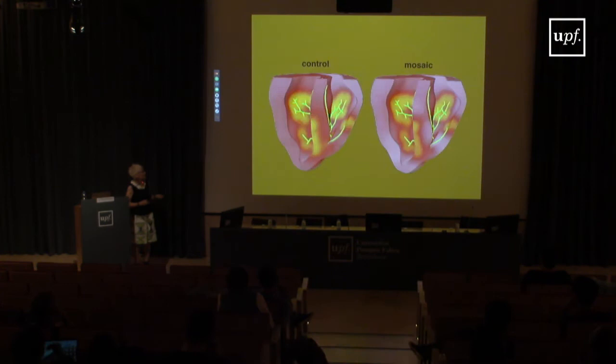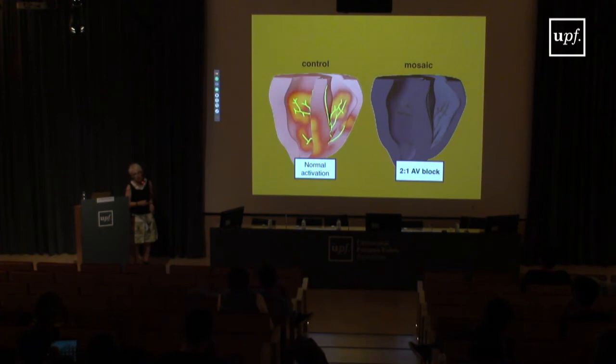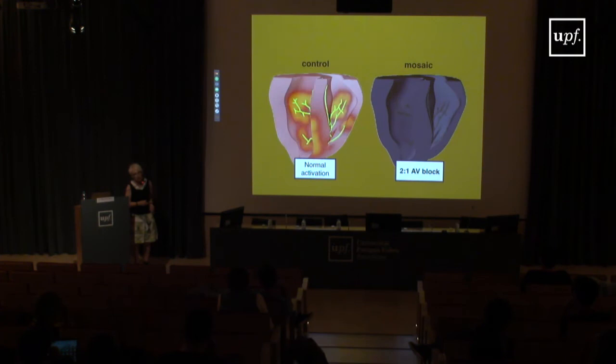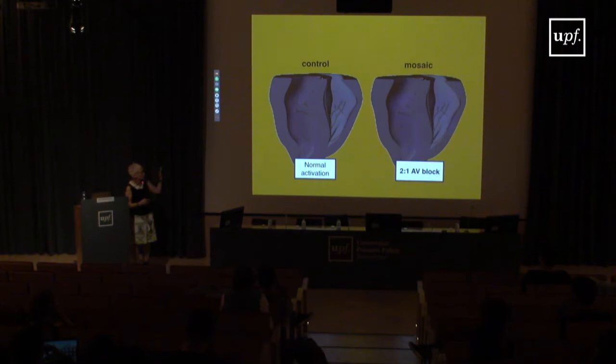Once we incorporated the mosaic Purkinje system at the tissue and organ scale, we could reproduce her phenotype. The control heart shows normal sinus rhythm; with mosaic implementation the action potential is a little longer, one ventricle activates a little later, and this leads to a two-to-one block — propagation fails on one side only, producing ventricular arrhythmia. This was a very prominent feature of her clinical phenotype. We were able to explain using simulations why this girl got arrhythmia.